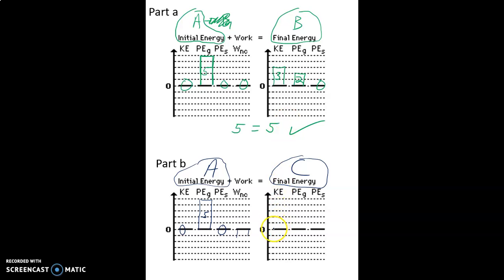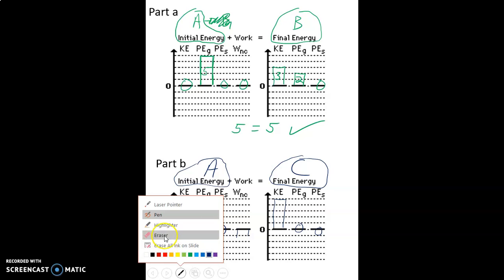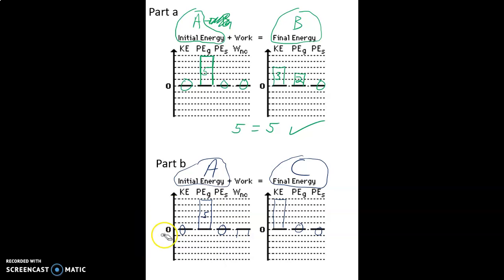If we had done it from A to C we would have drawn this all the way up like this and then it would have been zero and zero, but that's not correct because we know in this case we're going to end up with less kinetic energy.